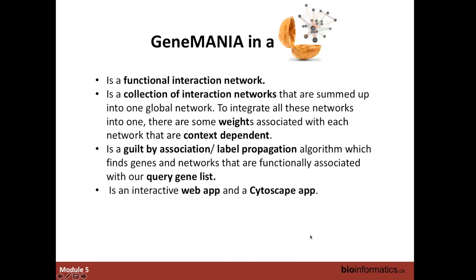Here is a short summary of keywords defining GeneMania. GeneMania is a functional interaction network where nodes are genes or proteins, connected by edges if they are functionally associated. For example, proteins may be known to physically interact, belong to the same biological process, or co-localize. All functional networks are merged into one global network with associated weights, helping predict gene function and relate new genes to the network. GeneMania uses the concept of guilt by association to find genes and networks associated with your genes of interest.